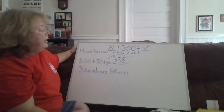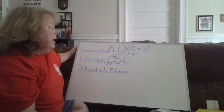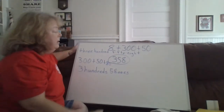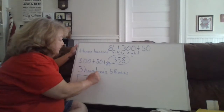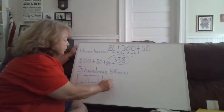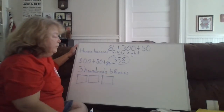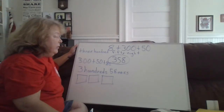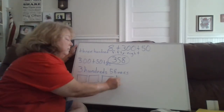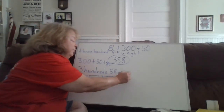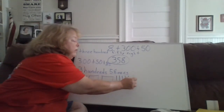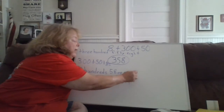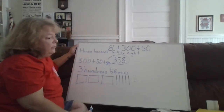What's another way I can make that number? I can do my base ten blocks — the simplest way, showing three big hundreds. And I could do five tens. And eight ones: one, two, three, four, five, six, seven, eight. That makes three hundred fifty-eight.